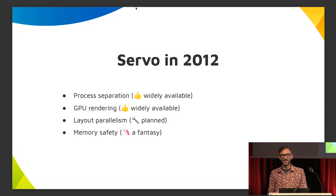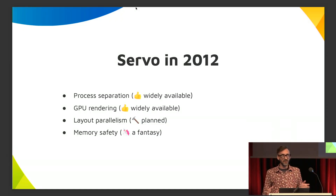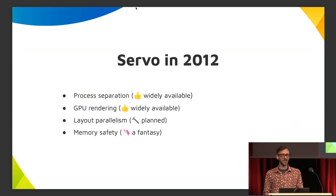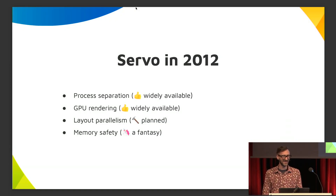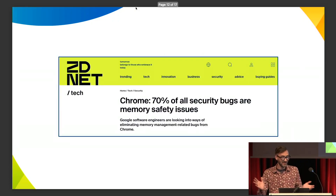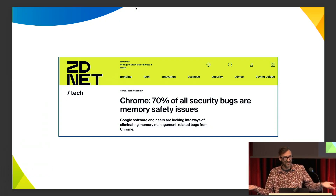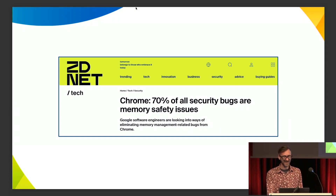Layout parallelism, however, is not something you have in your browser today. When you layout a page, it's done on one thread, and there's a lot of intertwining of elements with data dependencies that make this very difficult. There's a lot of work to make this happen, but it's not there yet. Memory safety, on the other hand, is essentially a fantasy in C++. The Chrome team released a report saying that 70% of the security issues they face are memory safety issues, because a browser is a huge piece of software where it's very easy to make mistakes.